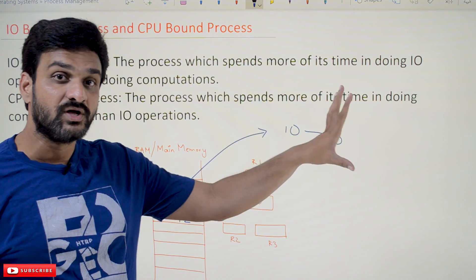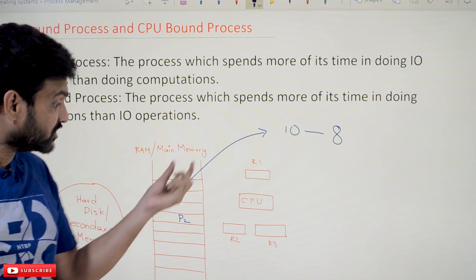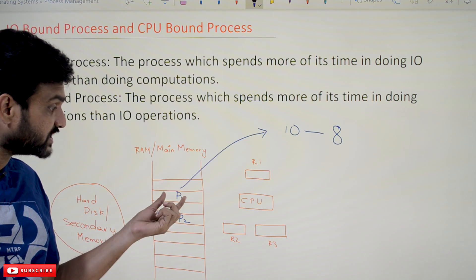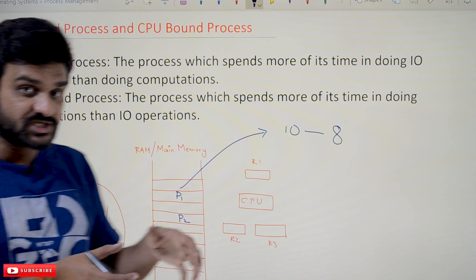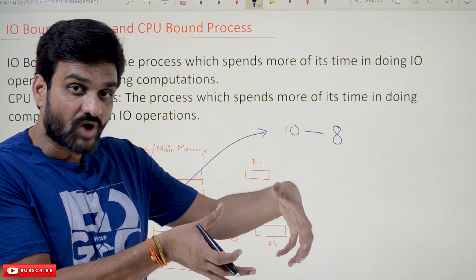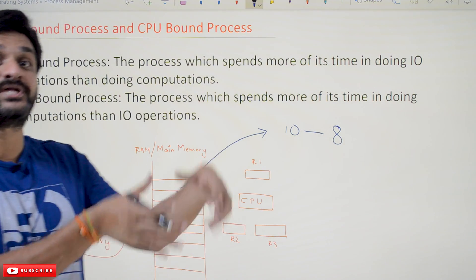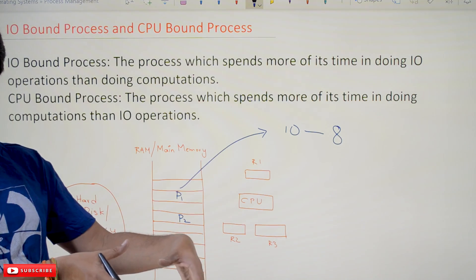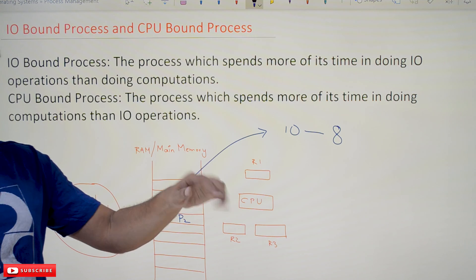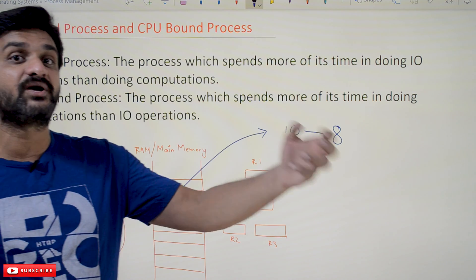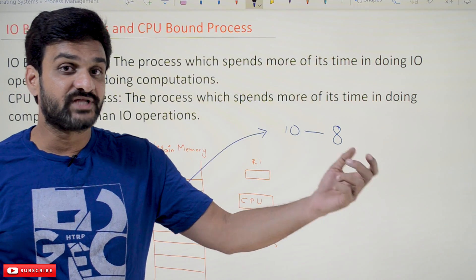So, 8 out of 10 instructions are doing IO operations, which is why this process is called an IO-bound process — it is bound to do IO operations more than computations. The remaining instructions perform computations on the CPU.